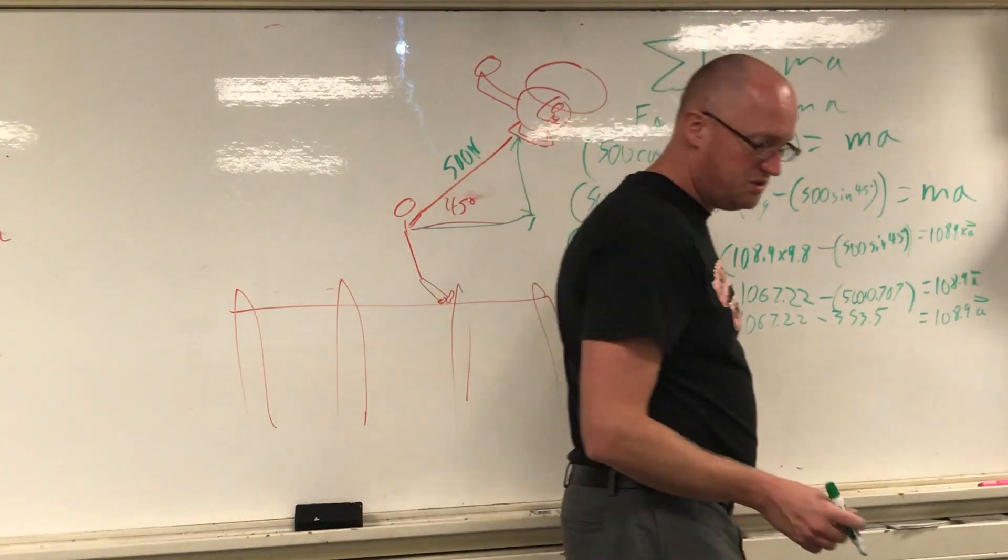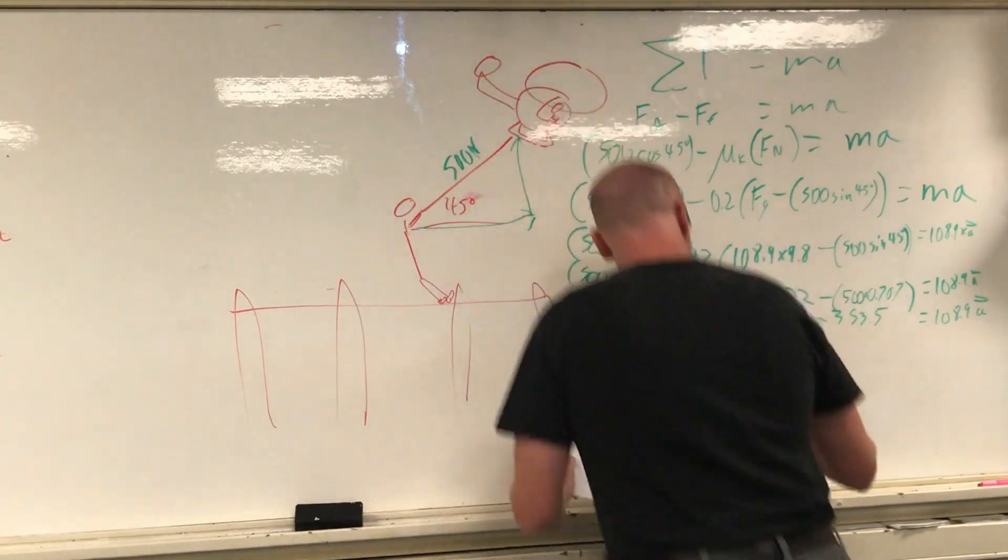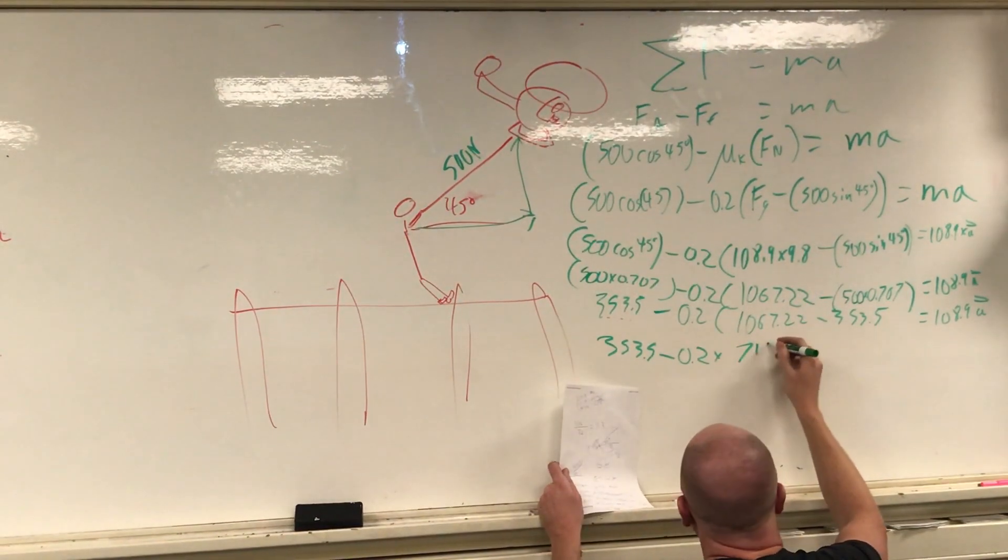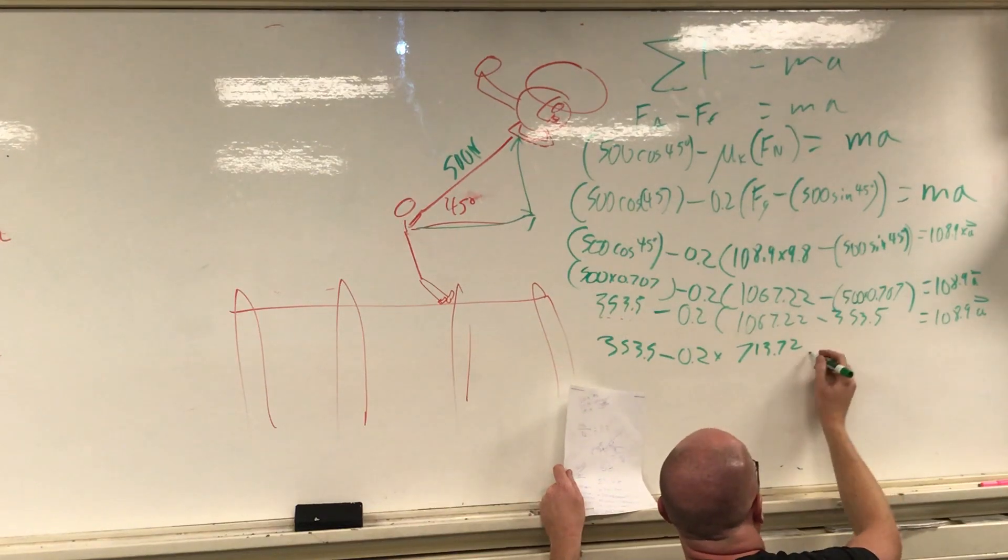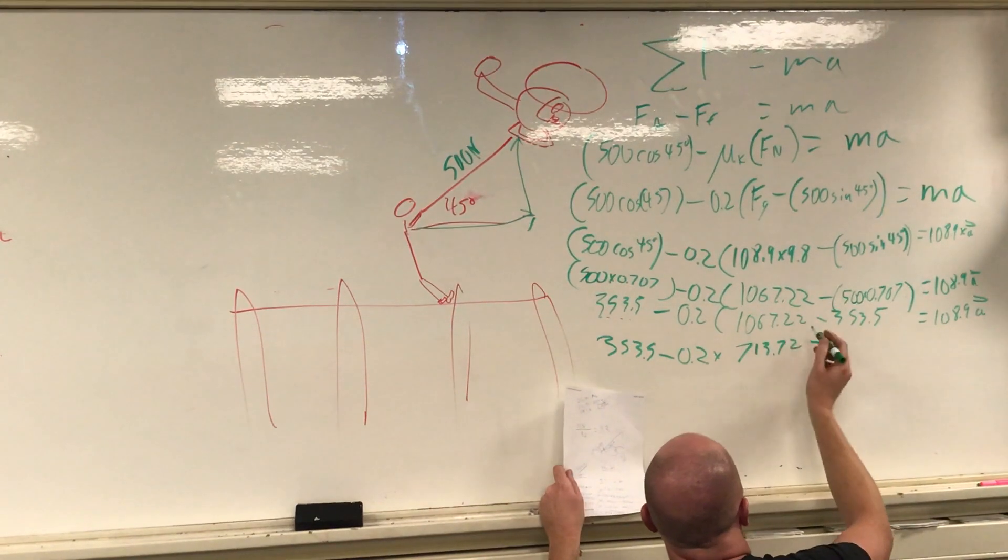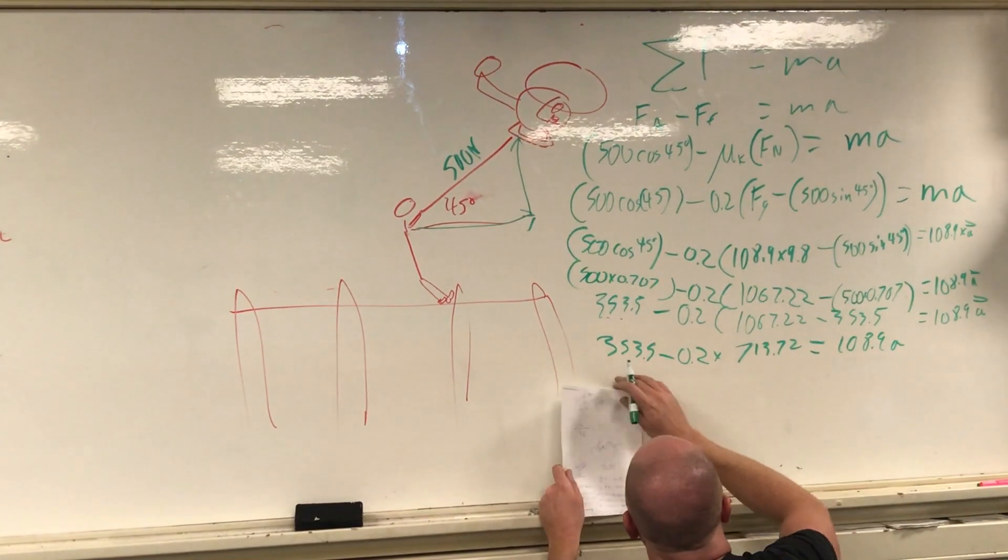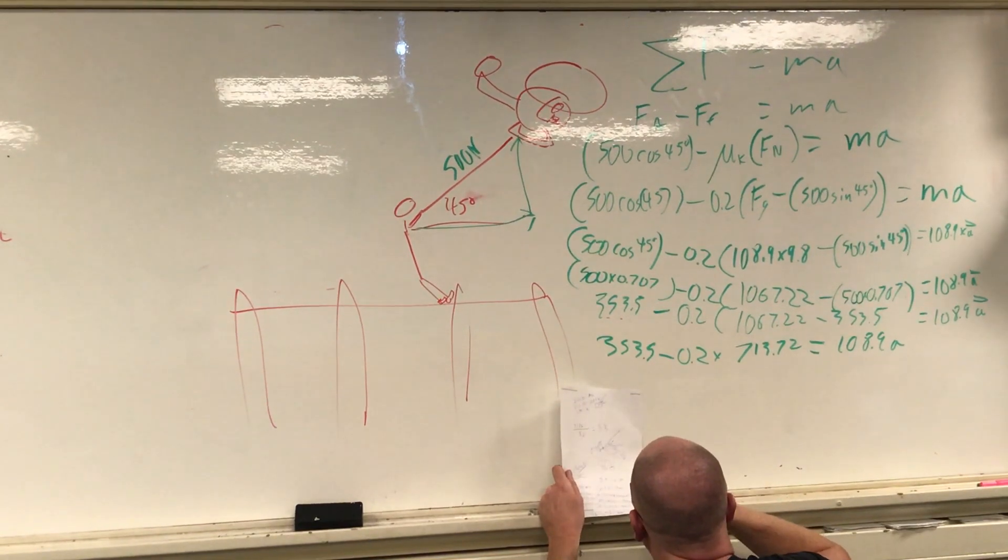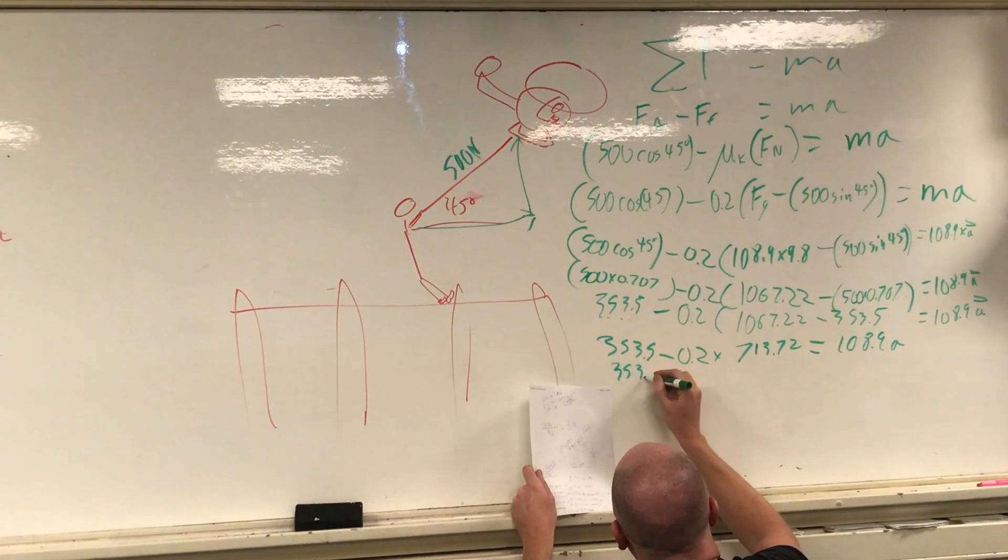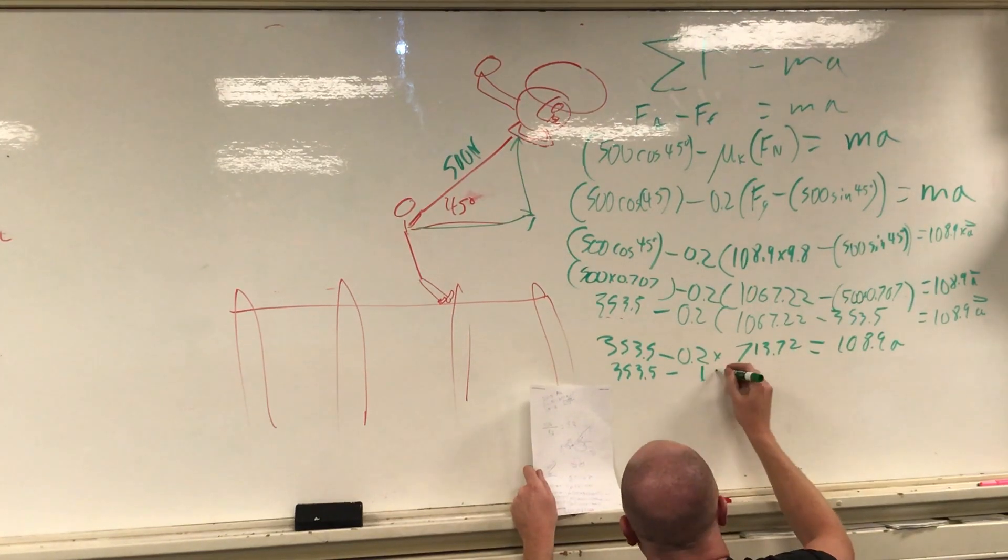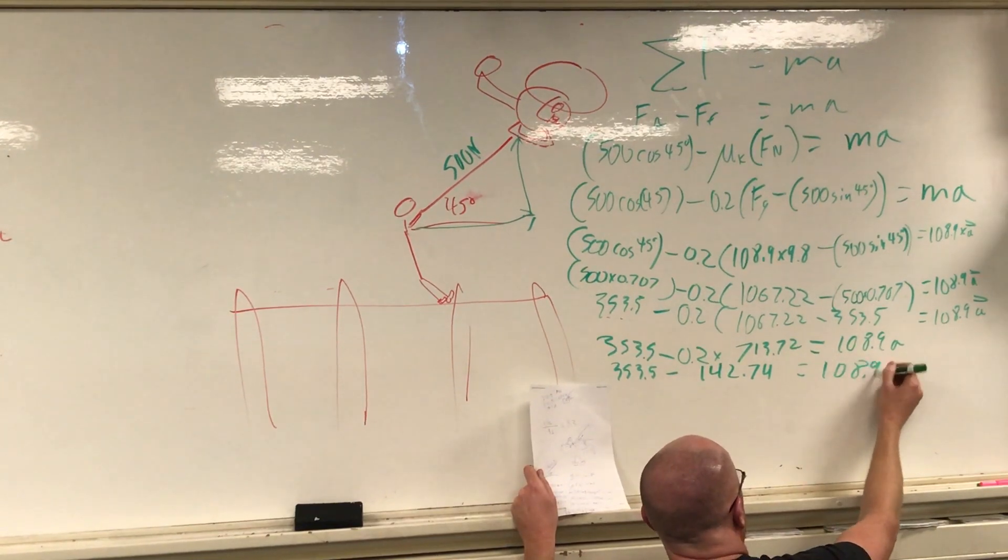Okay, so multiplying these together and what I get: 353.5 minus 0.2 times, let's see, 1067.22 minus 353.5 is equal to 108.9 acceleration. Okay, going down here, 353.5 minus 0.2 times, okay, 1067 minus 353.5. Let's see, I did that once upon a time. What I get, I got 713.72. And can't be right, oh well.